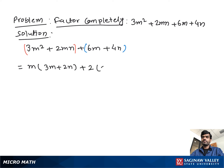Now from both sides we take out 3m + 2n as a common, then we have left m + 2. And this is our final and complete factor.